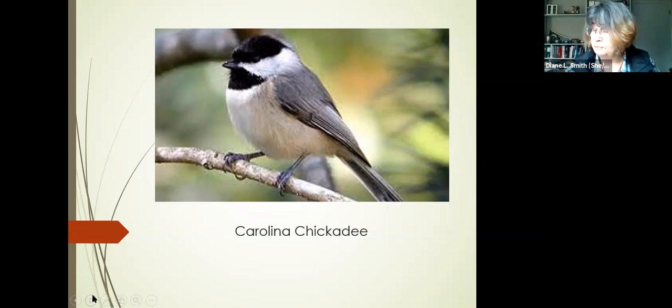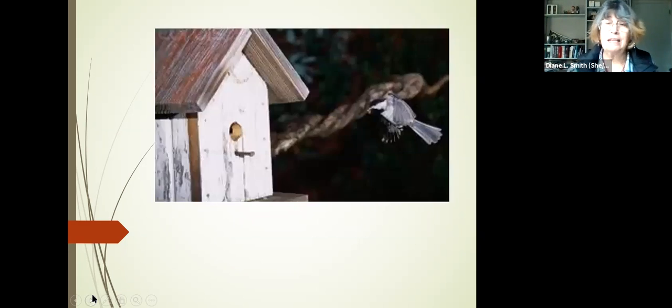They do build their own cavity, which is interesting. They use existing cavities, but chickadees can actually excavate their own cavities as well. So they prefer to be on the edge of a forest. And they generally cover a territory of three to six acres, although sometimes pairs will nest within even as close as 30 feet to each other. So they're not terribly territorial. Here's a picture of a chickadee approaching its nest.